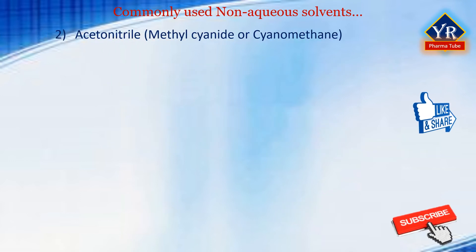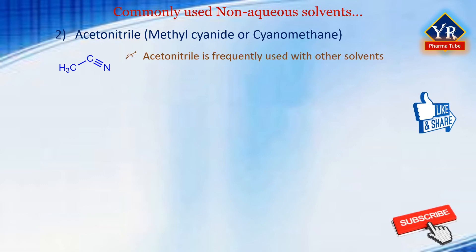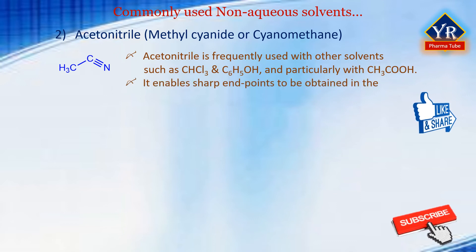2. Acetonitrile, also known as methylcyanide or cyanomethane, is frequently used with other solvents such as chloroform and phenol, and particularly with acetic acid. It enables very sharp endpoints to be obtained in the titration of metal acetates when titrated particularly with perchloric acid.